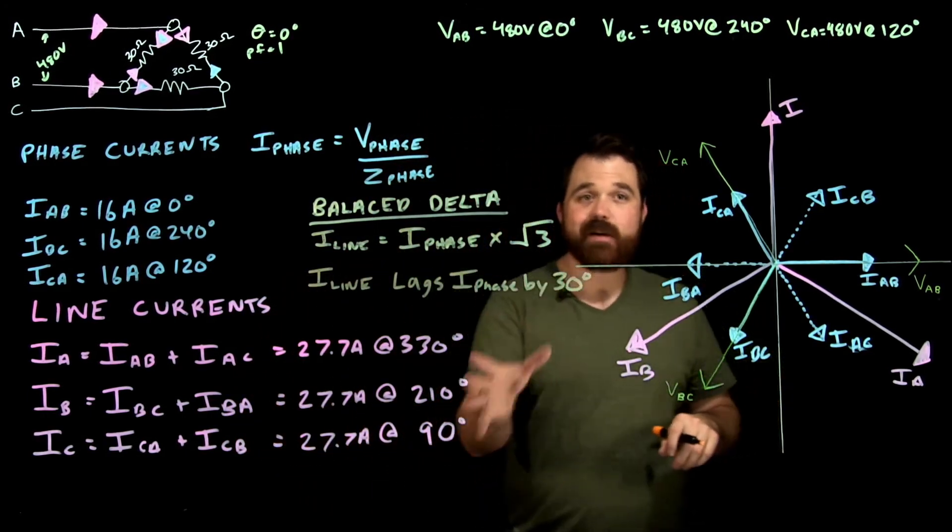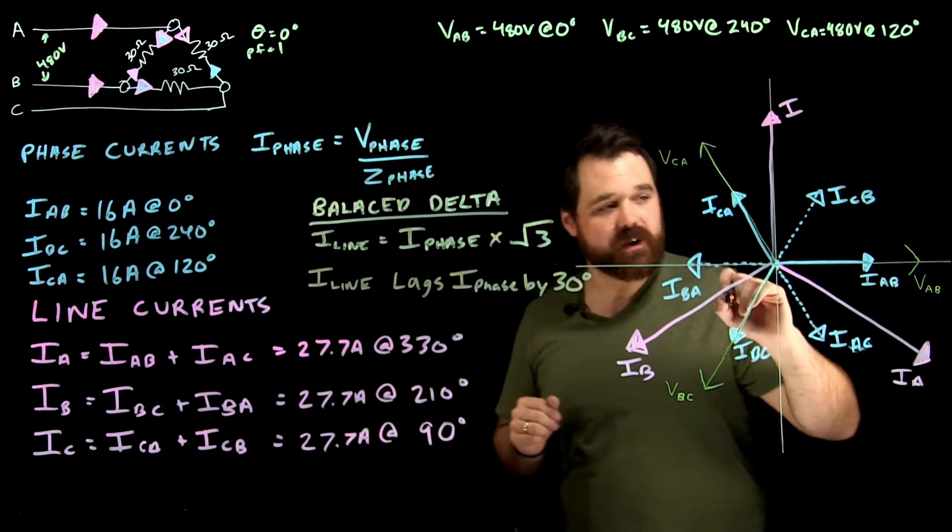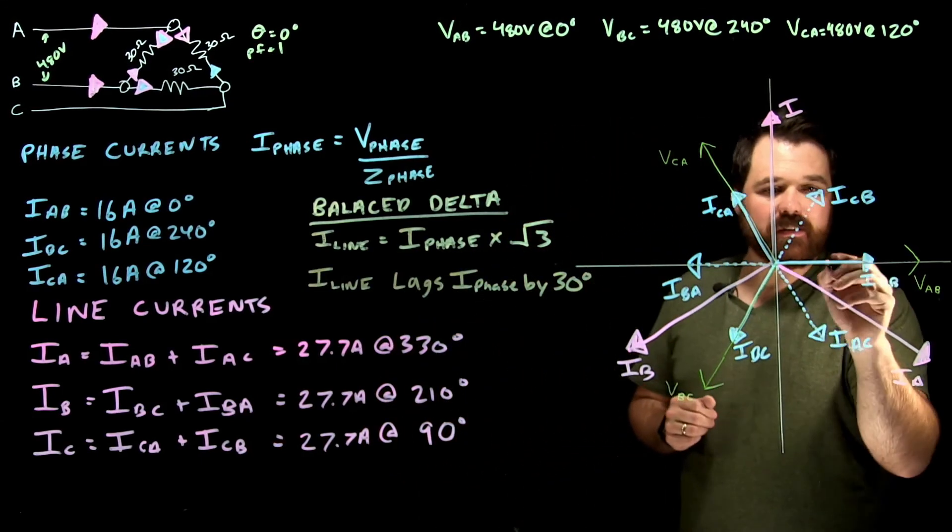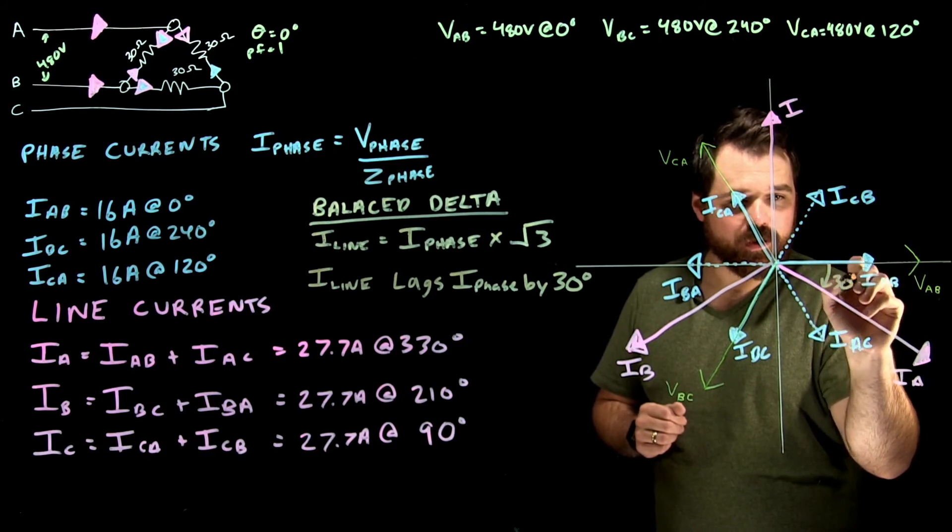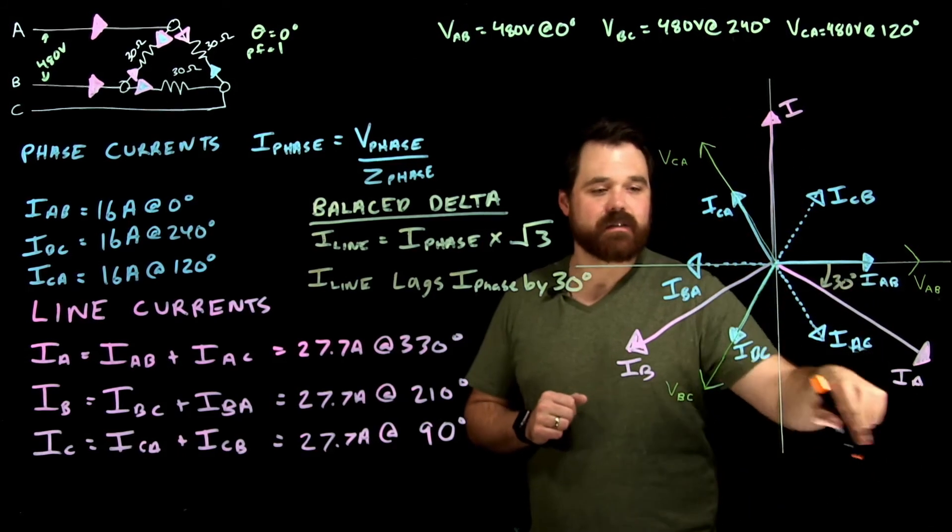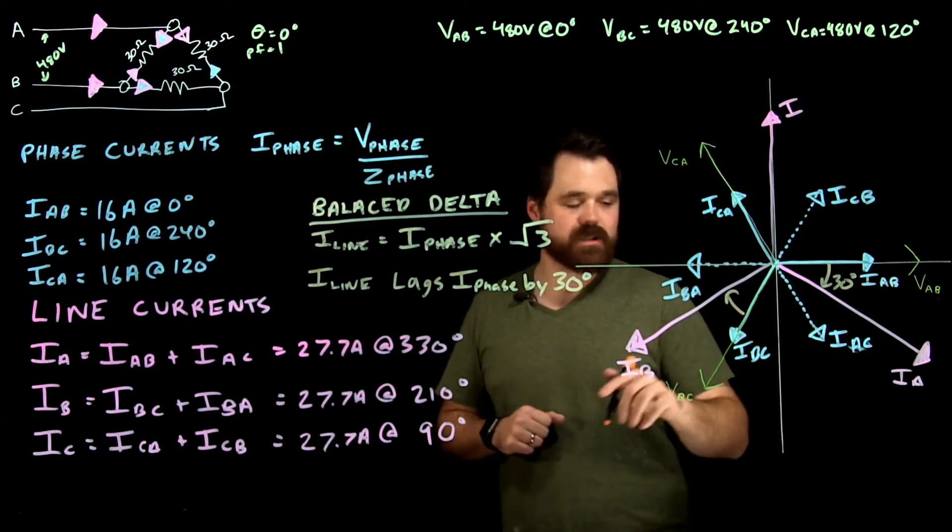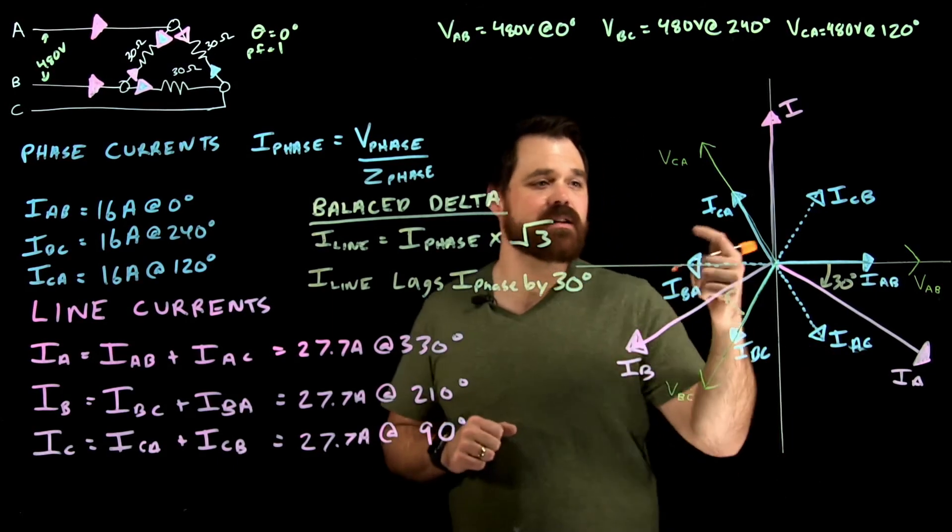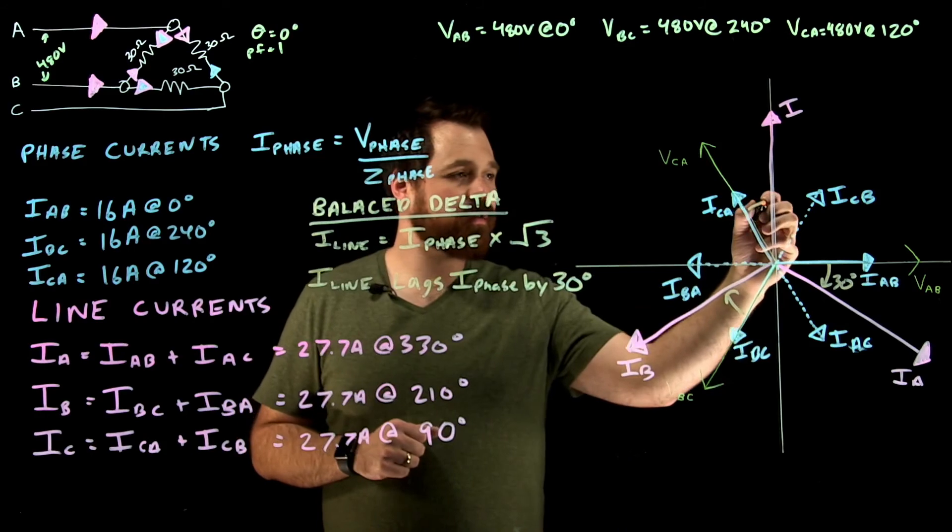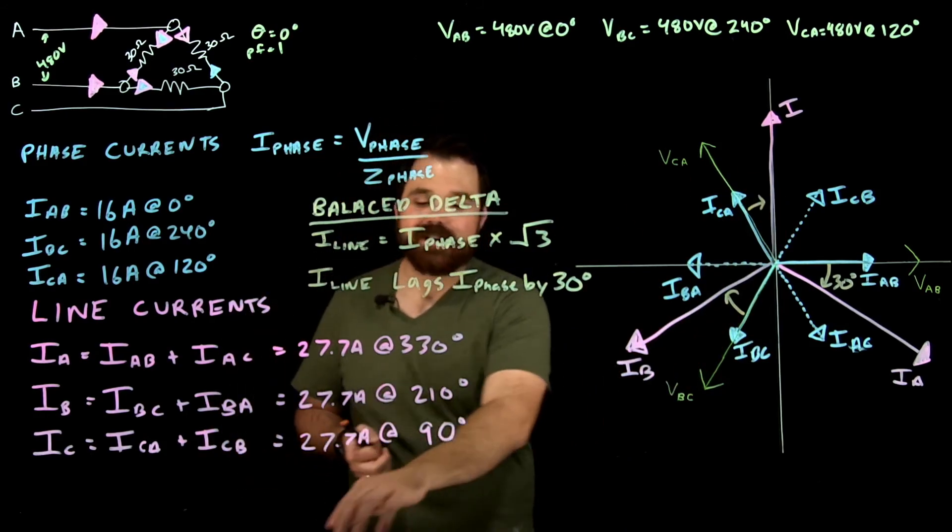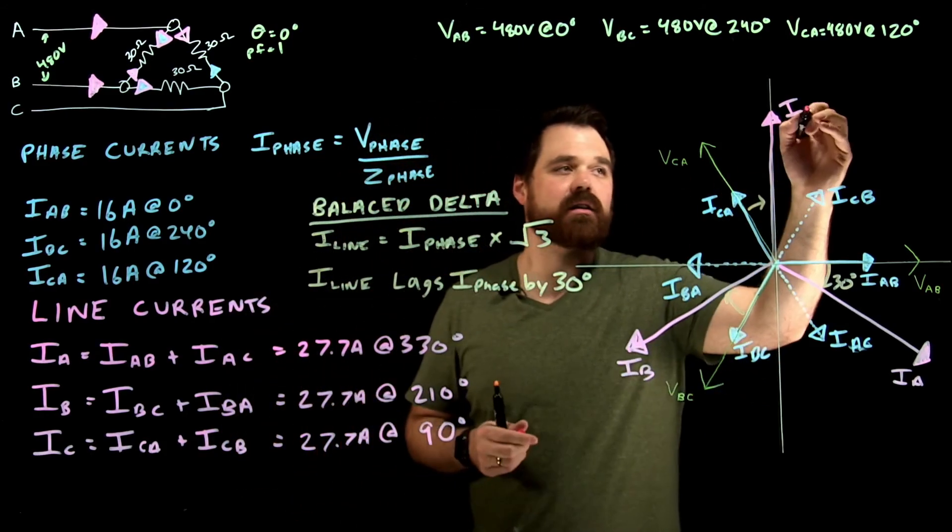The other rule is that I line lags I phase by 30 degrees. So let's look at that really quick. Over here, phase A, phase B, 30 degrees is where I see line A. Phase B, 30 degree lag is where I see line B. Phase C, 30 degree lag is where I see line C current.